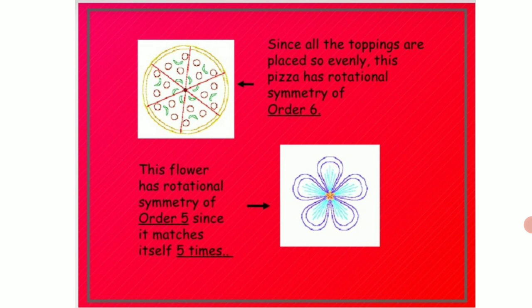Now the picture of a flower is given which is showing 5 petals in it. So this will show a rotational symmetry of the order 5. That means if you are going to turn it, one petal will overlap over itself when you take a complete turn of 5 rounds or 5 times. This flower has rotational symmetry of order 5 since it matches itself 5 times.